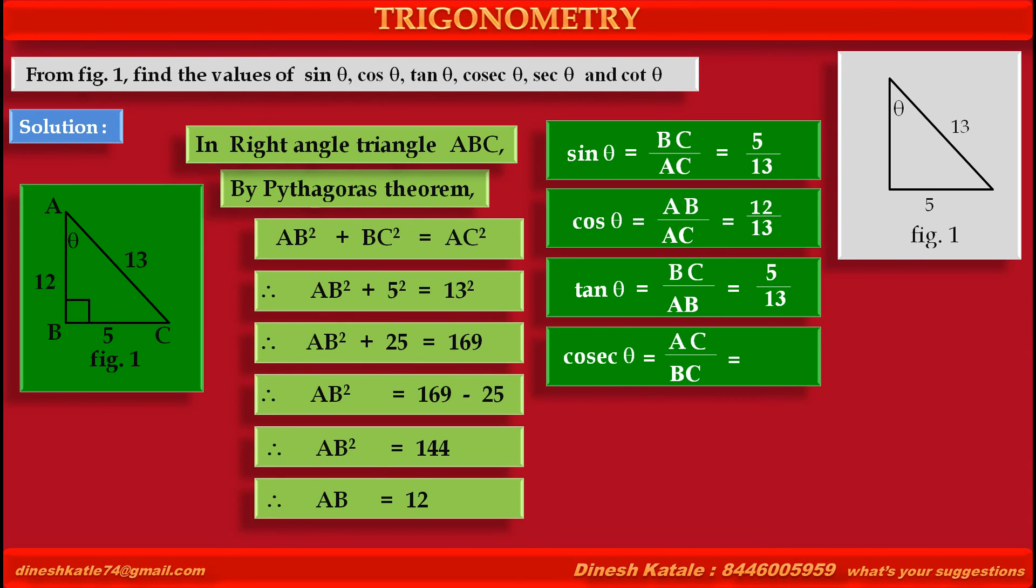Cosec theta is equal to hypotenuse upon opposite side, i.e. AC upon BC, is equal to 13 upon 5. Sec theta is equal to hypotenuse upon adjacent side, i.e. AC upon AB, is equal to 13 upon 12.